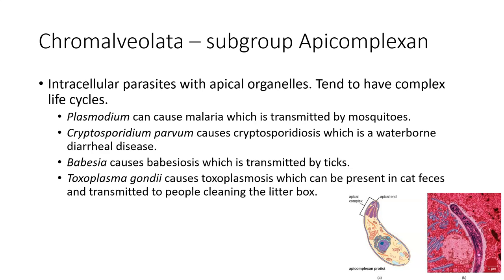Babesia causes babesiosis — it's a pretty brutal disease that can be transmitted by ticks. Toxoplasma gondii causes toxoplasmosis, which can actually cause mental illness. It's a weird parasite that can do a weird form of mind control, especially in rats. What happens is the parasite gets into the rat and makes it unafraid of cats, so the cat eats the rat and then the cat gets toxoplasmosis.